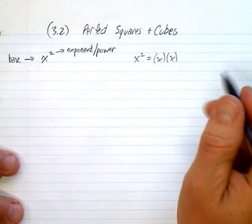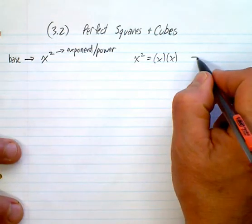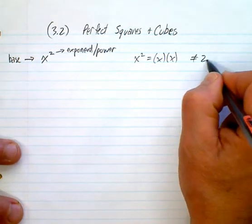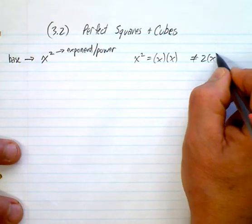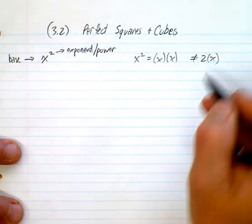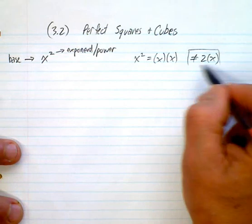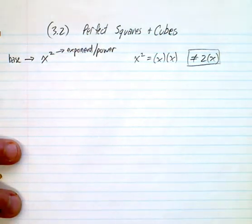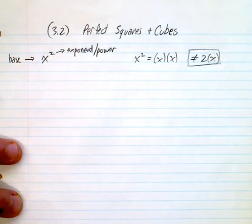Big thing — it does not equal 2 times x. This is huge. It does not equal 2 times x, and that is something that a lot of you are going to do.